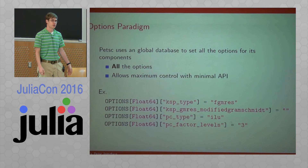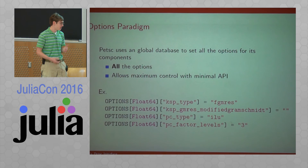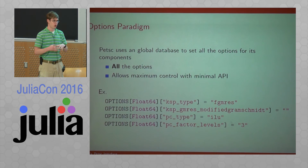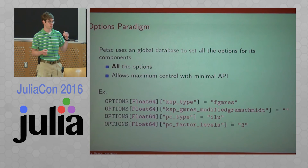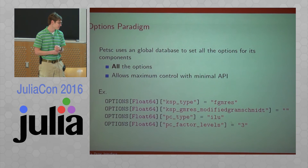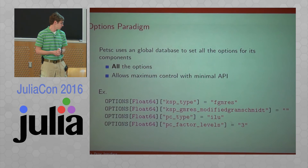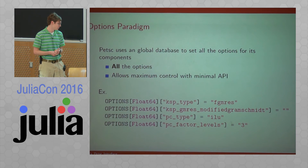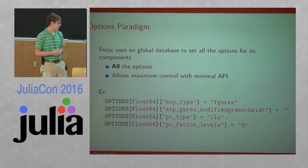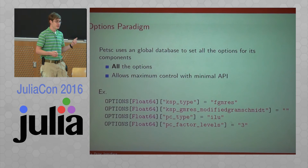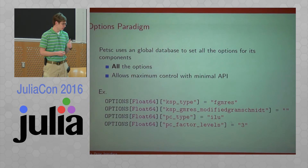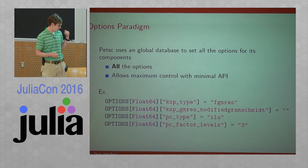PETSc makes it easy to mix and match Krylov solvers and preconditioners via the options database — a database of all options for all PETSc components, from high-level choices like what Krylov method to use down to little settings for all the different algorithms. The example code sets some options in the float64 version of PETSc: the first line uses flexible GMRES instead of default GMRES, the second uses modified Gram-Schmidt orthogonalization inside FGMRES, and it sets the preconditioner to ILU with three levels of fill. This is the recommended approach in both C and the Julia interface — just change a couple of lines to try different combinations. The full API is also wrapped if you prefer that approach.